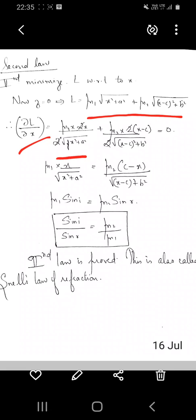Setting ∂L/∂X equal to zero, I get mu1·X/√(X² + a²) = mu2·(c - X)/√((X - c)² + b²).